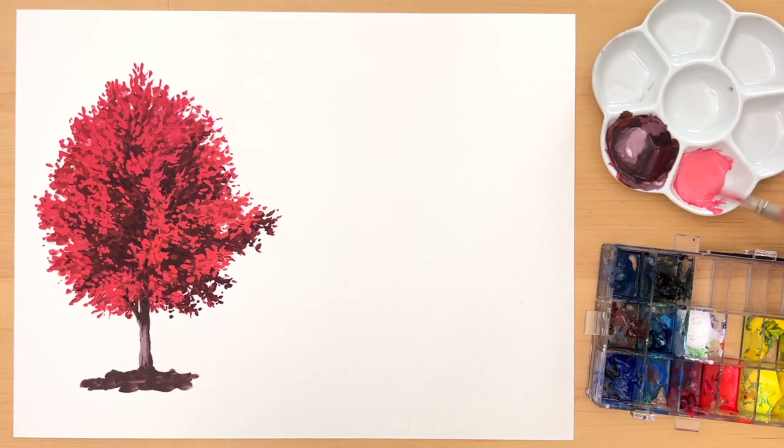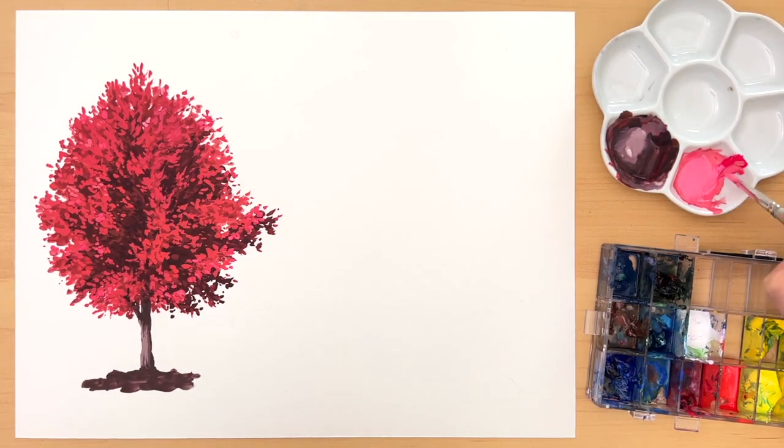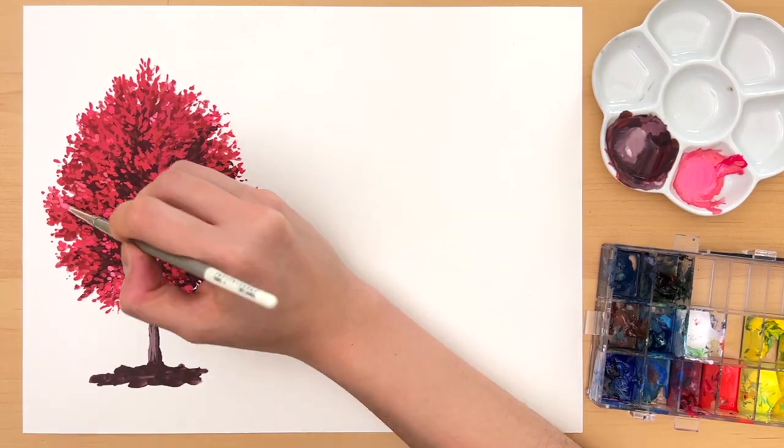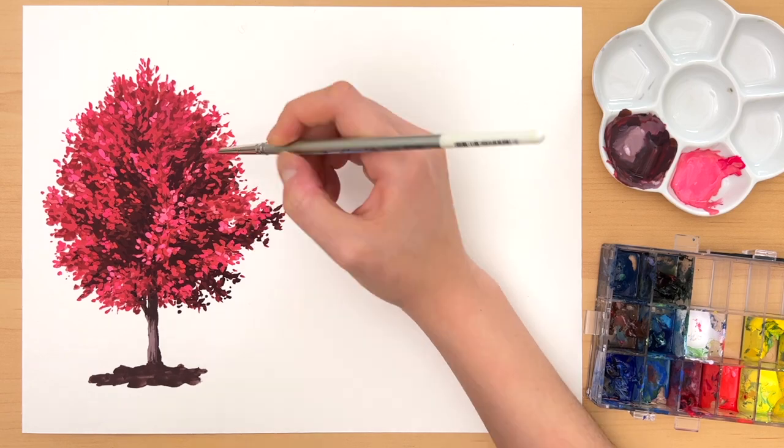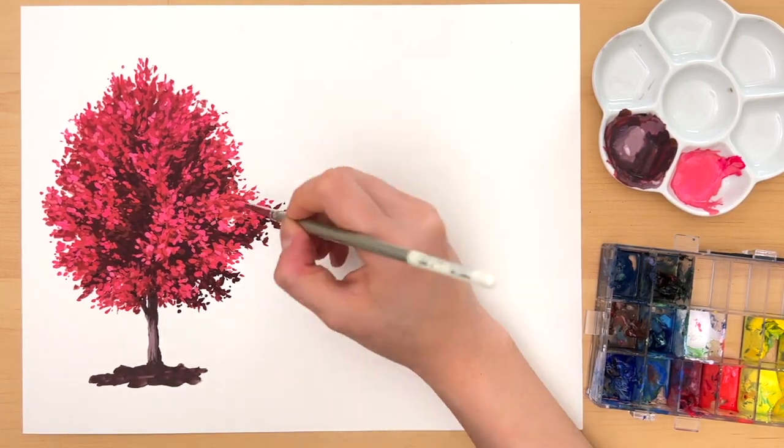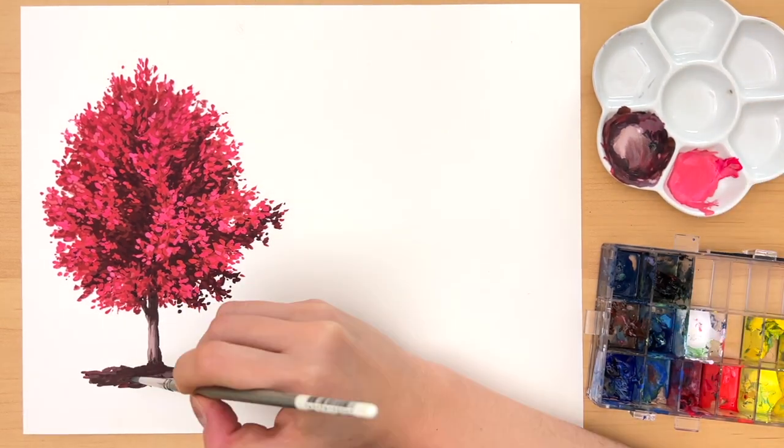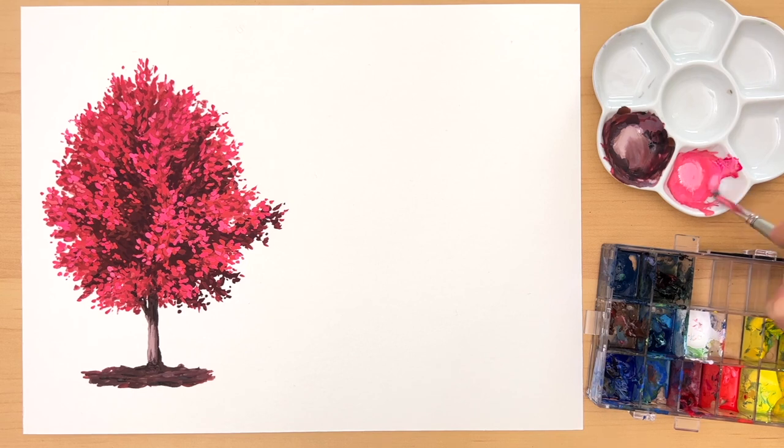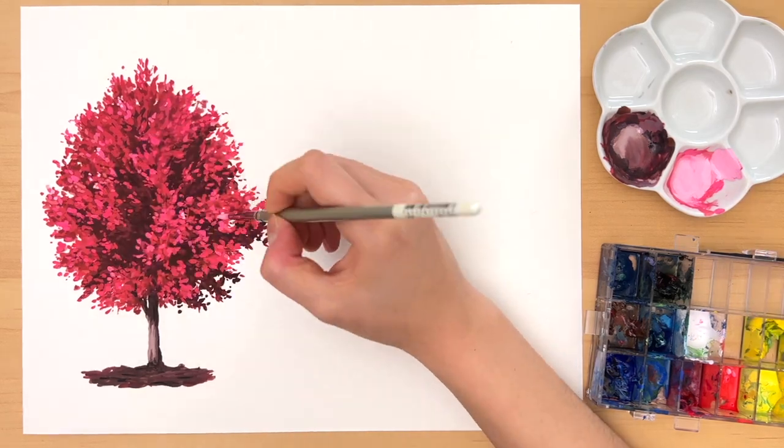Now if you wait for your previous layer to dry first, your next layer will be opaque and sitting on top of the previous layer instead of mixing into it. You also want to build your highlight slowly layer by layer. As you can see here, instead of going straight for a very light pink, I'm slowly making my pink color lighter and lighter by layers, waiting for my previous layer to dry before I put down my next one. This will help create a nice transition from dark to light and help your tree look more natural.